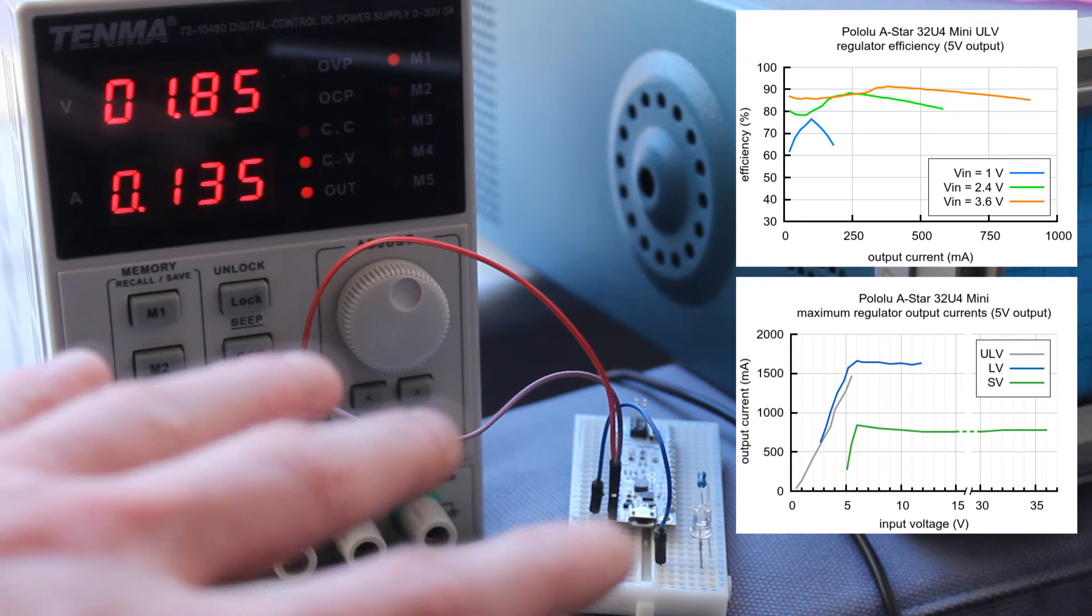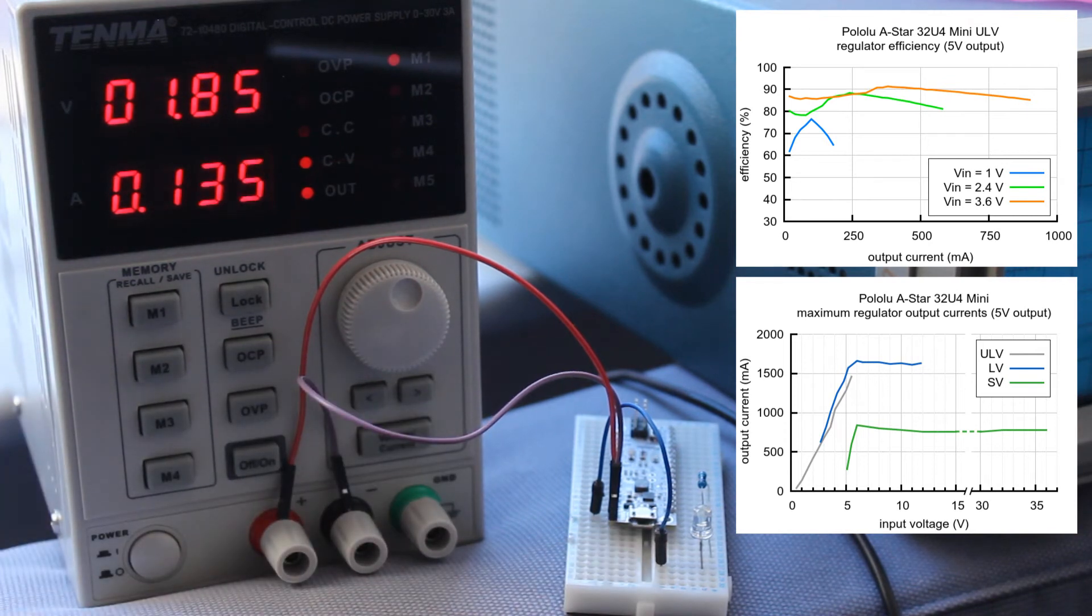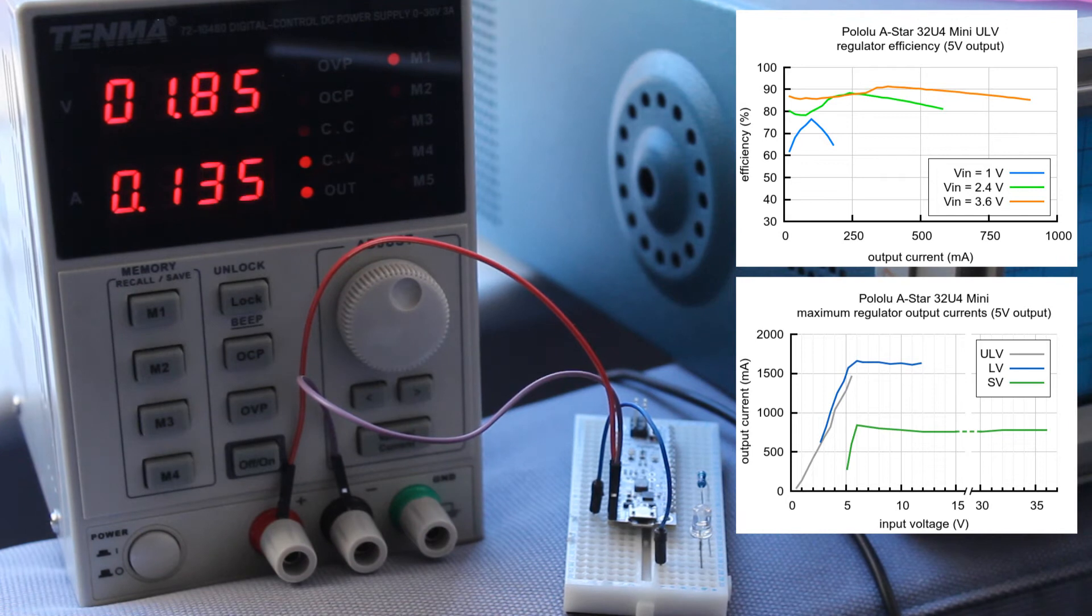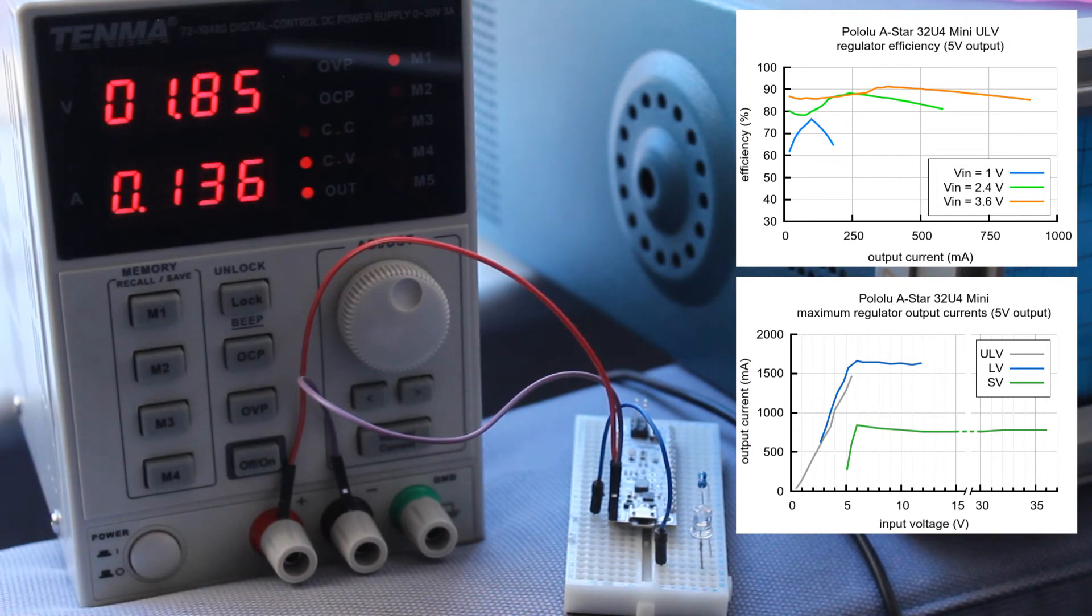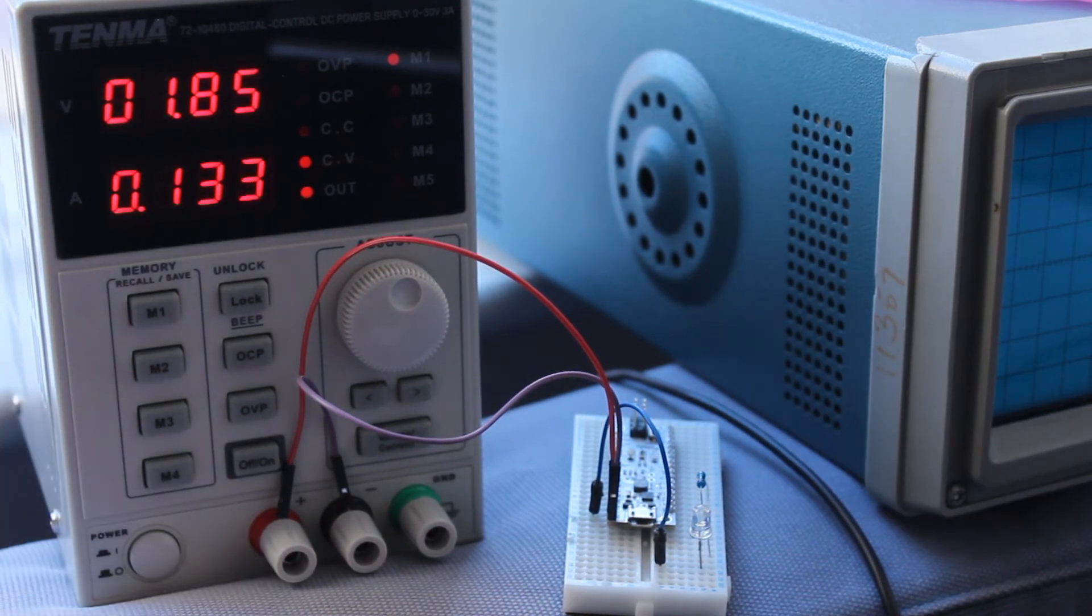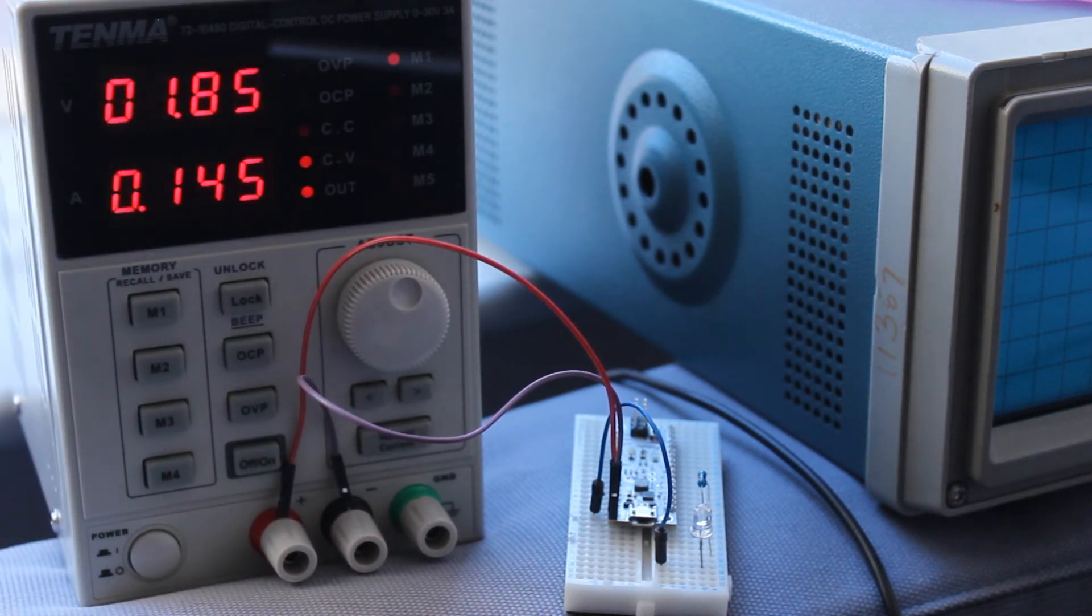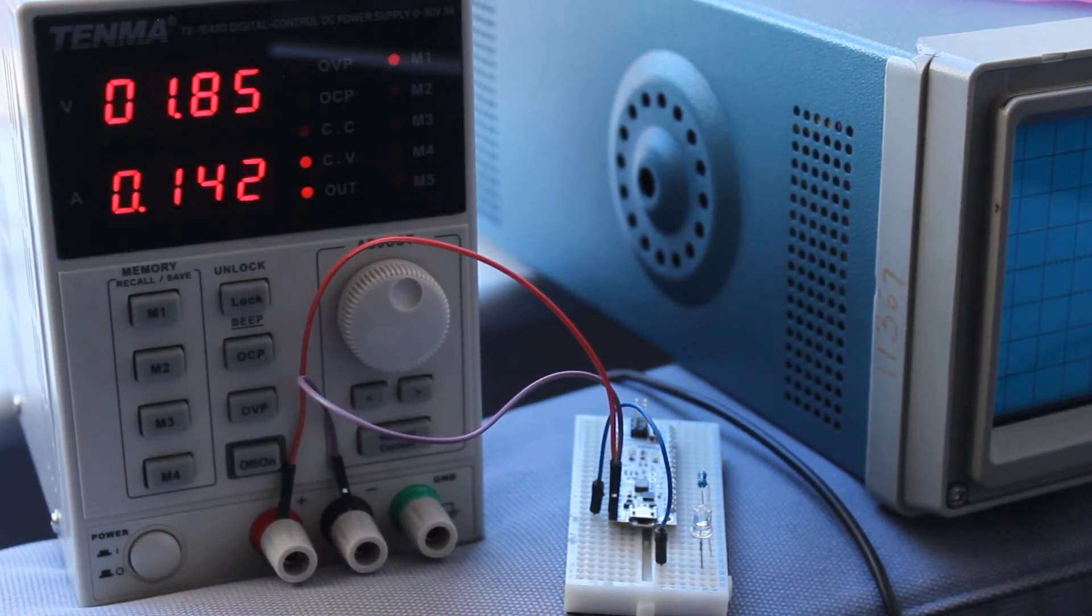It would be pulling far too much current for many batteries to handle. So it probably will work down to 0.5 volts but you're going to need to be able to give it a lot more current than most batteries will be comfortable providing. So let's have a look at this hooked up to a LiPo battery and we'll throw it onto the scope and we'll see what the noise is like on the lines.